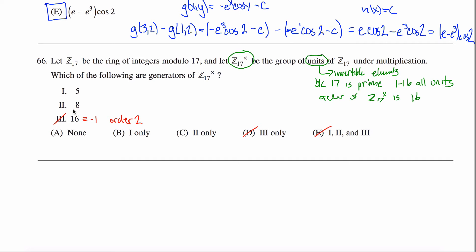8 squared is 64, which is already a lot to work with in my head. So I'd rather deal with the smaller number 5, and that'll give me some information about 8. 5 squared equals 25, which is equivalent mod 17 to 8 — how convenient. Then 8 times 5 equals 40, and 40 is equivalent mod 17 to 6, because 17 times 2 is 34 and 40 minus 34 is 6.